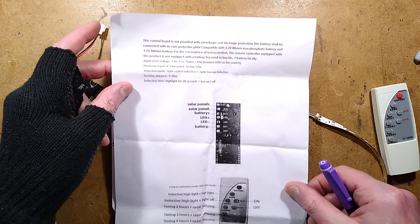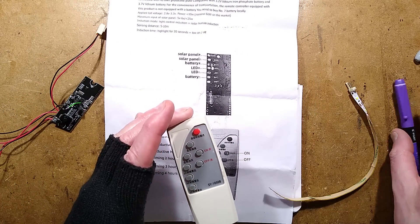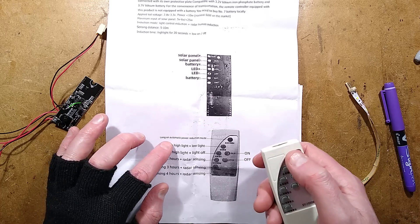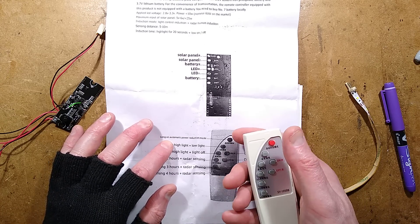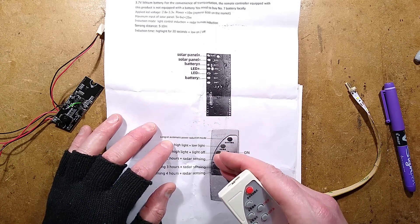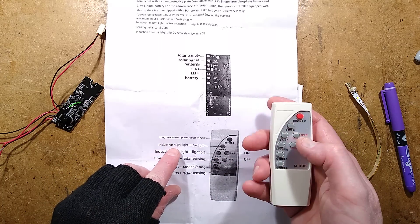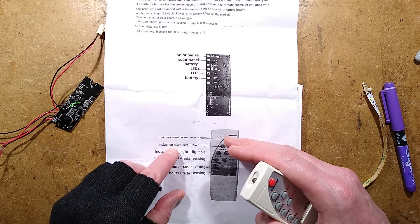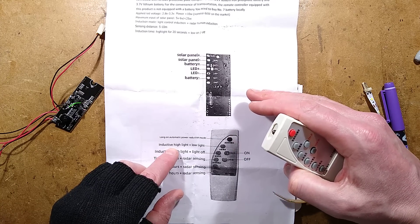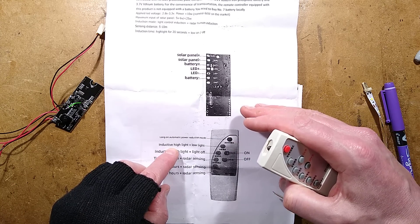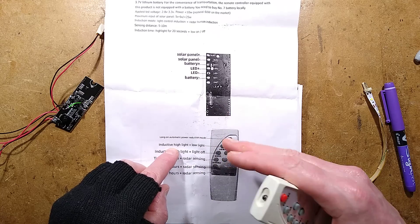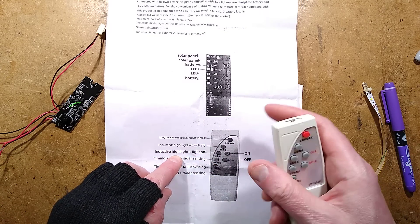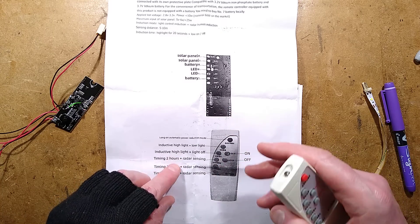The modes. It has the modes, the remote control in Chinese. You can turn it on. You can turn it off. You've got the long on automatic power reduction mode. Not really sure what that is. It came quite bright, but I think maybe the intensity just dims down as the night goes on. You've got this button does inductive high light and low light, which basically means that it dims up and down. So it starts off, it dims up to quite a high brightness. And then after about 20 seconds, it dims to a low level. But when it detects you with the Doppler detection, it then ramps it up for another 20 seconds. The inductive high light and light off is simply just turning the light on and off when it detects your movement.